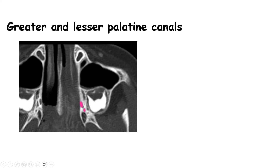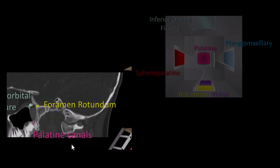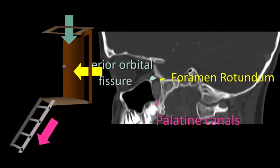Let's see this sagittal view again — that is the view from the side. You can see how the inferior orbital fissure is like a skylight of the room, with the foramen rotundum door in the back and the palatine canals as trap doors like a ladder leading the pterygopalatine fossa towards the mouth.